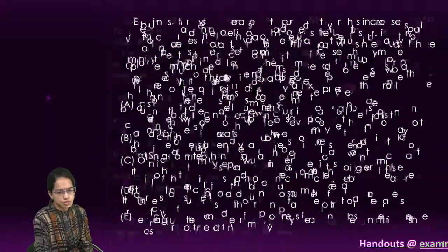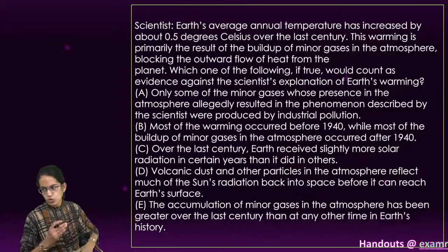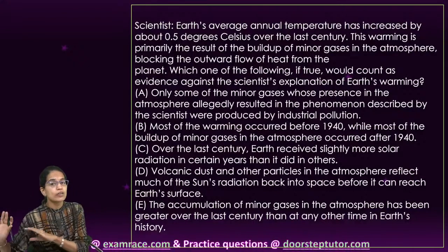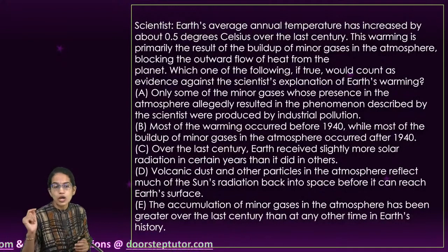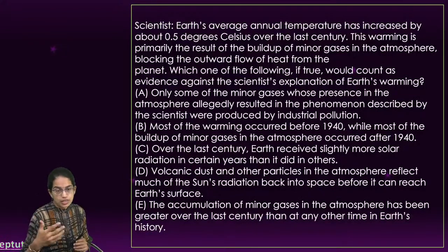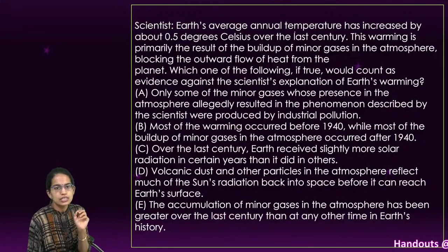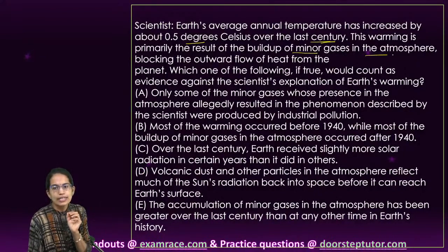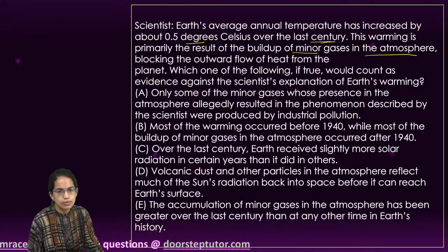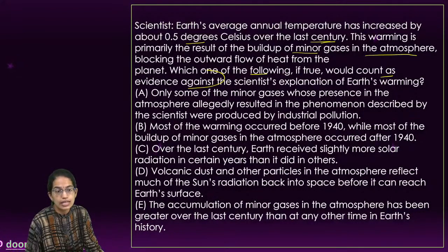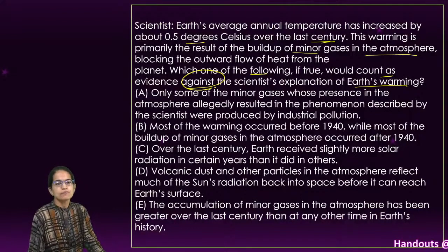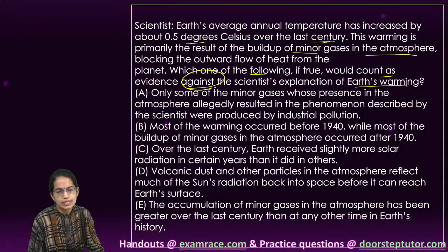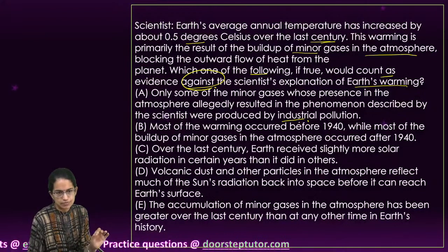Let's move on to the next question regarding science. These are the kind of questions you usually witness in your exam paper — passages are given independently with each question nowadays, so you have to ramp up your reading skill and be a proficient, fast reader. Scientists say that the average Earth's annual temperature has increased by 0.5 degrees Celsius in the last century. This warming is a result of the build-up of minor gases in the atmosphere blocking the outward flow of heat from the planet. The question asks: which one of the following is evidence against this explanation of Earth's warming?